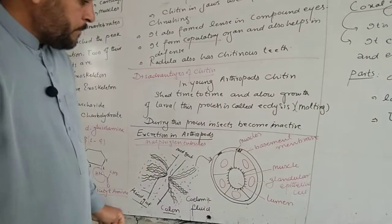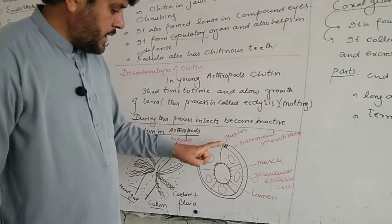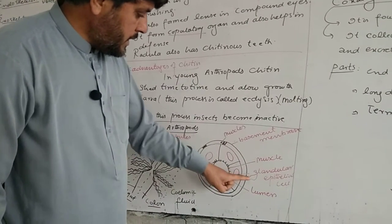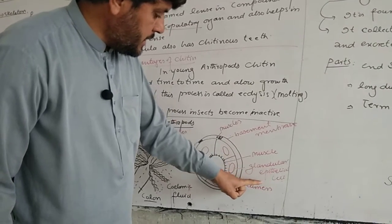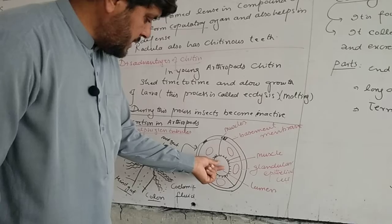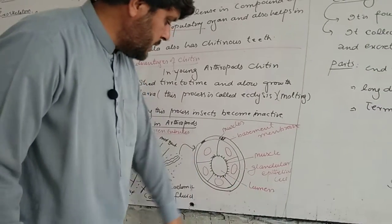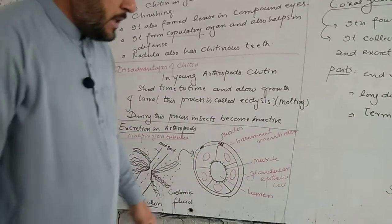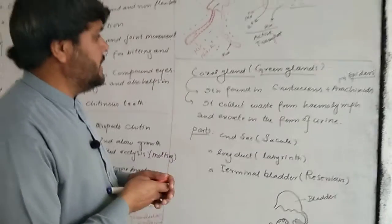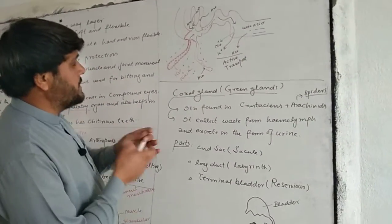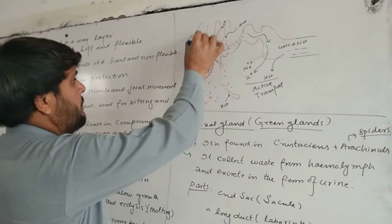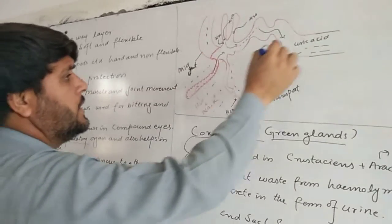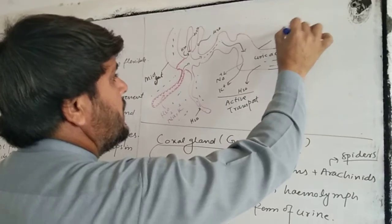Looking at the cross-section of Malpighian tubules: there are different types of muscles - longitudinal muscles and circular muscles. There are glandular epithelial cells which secrete substances. In the center there is a lumen channel, and there is a basement membrane which helps in filtration. Materials are transported from the hemolymph into the midgut and then to the hindgut.